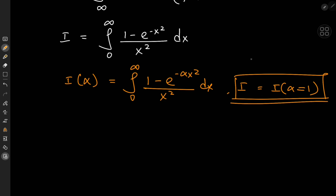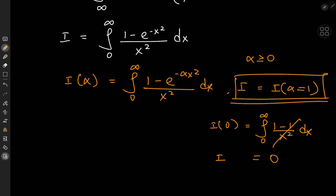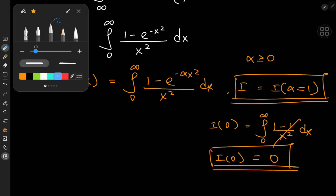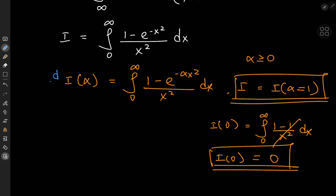We define the parameter α to be greater than or equal to 0. That gives us a nice initial value: if α = 0, we get the integral from 0 to infinity of (1 − e^0) / x² = 0/x² dx, so everything crashes to 0, meaning I(0) = 0. We'll differentiate I with respect to α and switch the order of integration and differentiation, which is mathematically valid because the integral function converges.